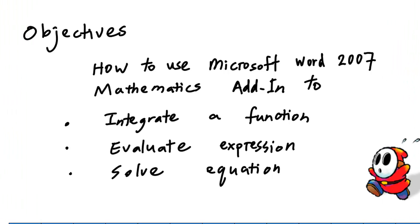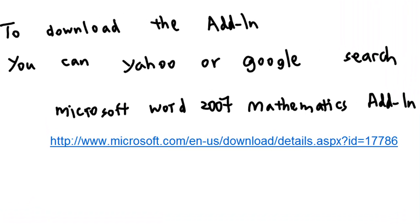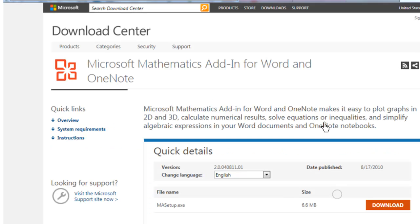Hi, the objectives of this recording is to show you how to use Microsoft Word 2007 mathematics add-in to integrate a function, to evaluate the expression, and to solve an equation. To download the mathematics add-in, you can Yahoo or Google search 'Microsoft Word 2007 mathematics add-in' and then you'll find the link. From the Microsoft Download Center, you can download the add-in for Word 2007.